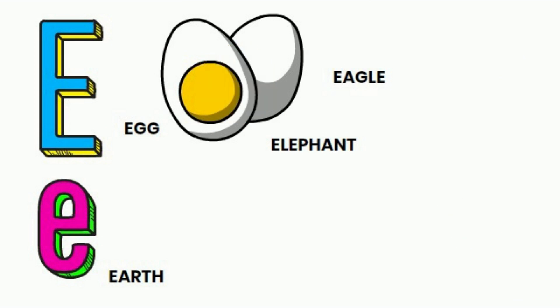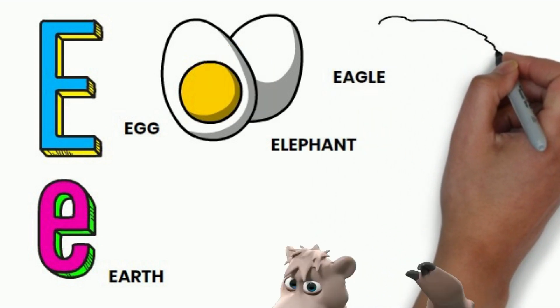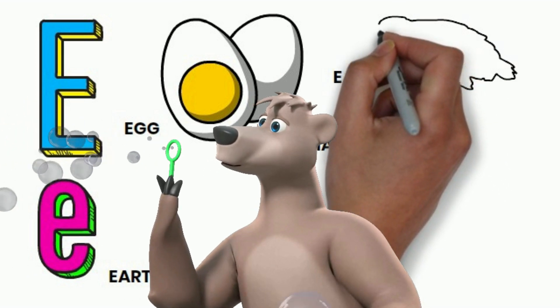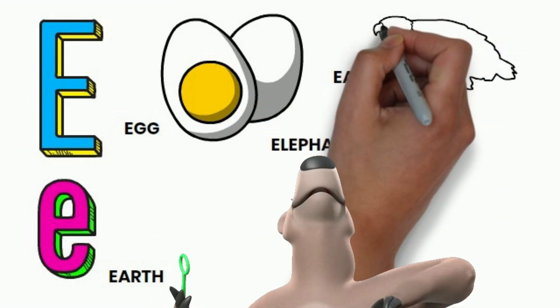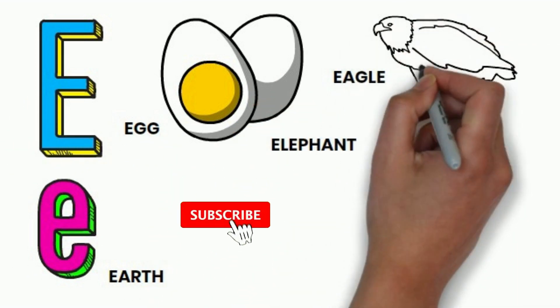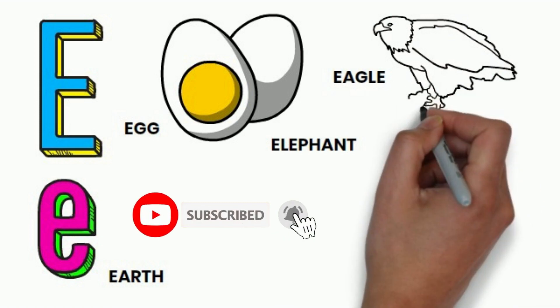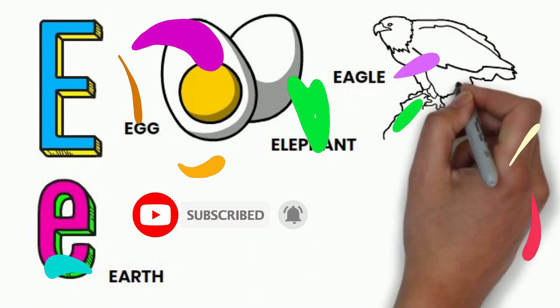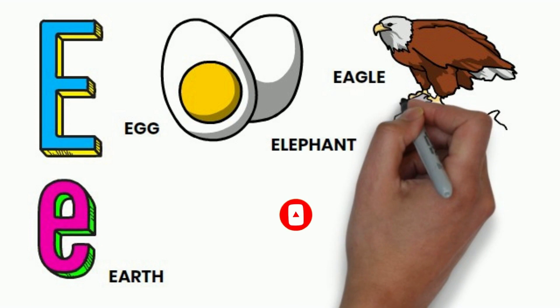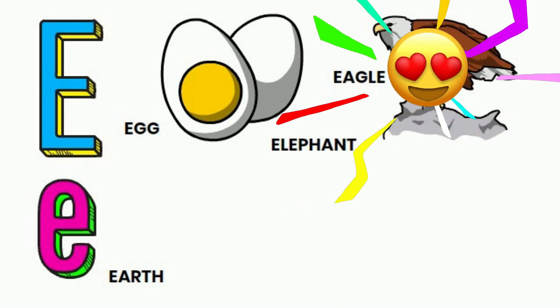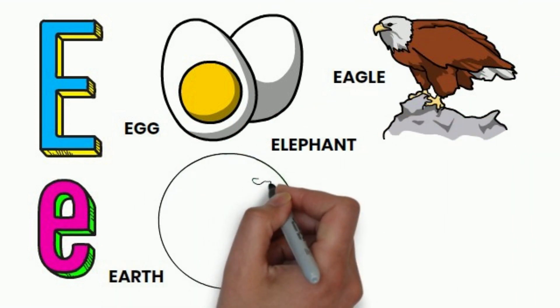Let's draw an Eagle. E, F, G, H, I, J, K, L, M, N, O, P, Q, R, S, T, U, V, W, X, Y, and Z. Now I know my ABCs. Next time won't you sing with me?